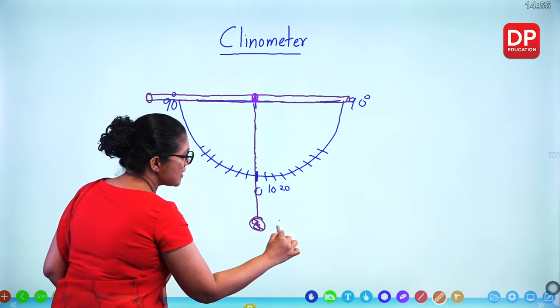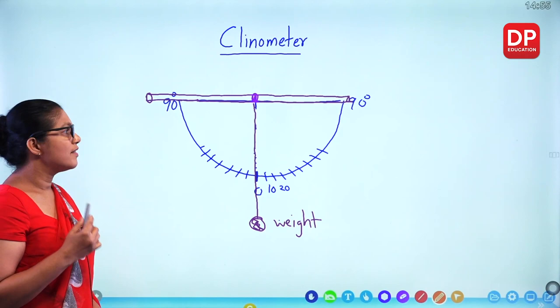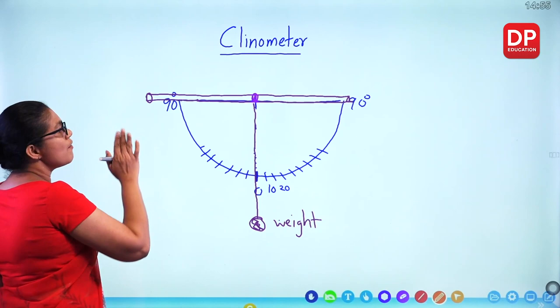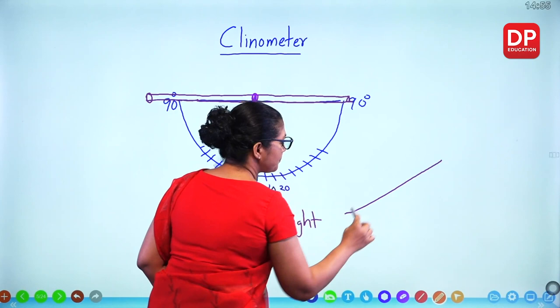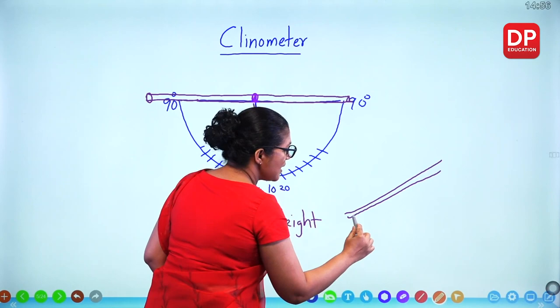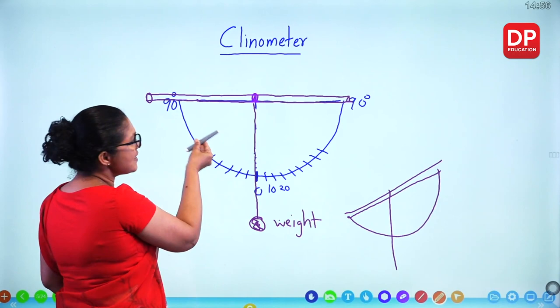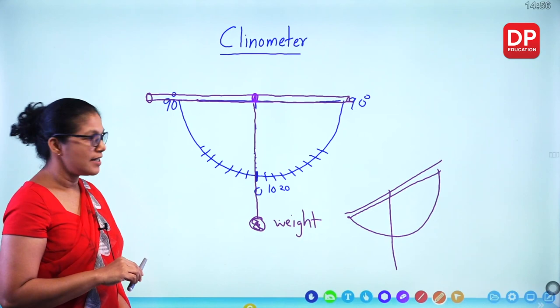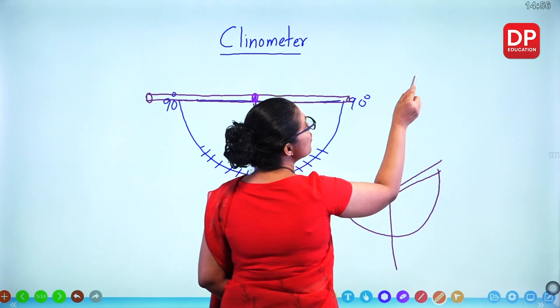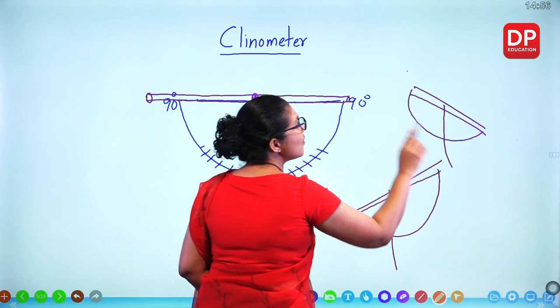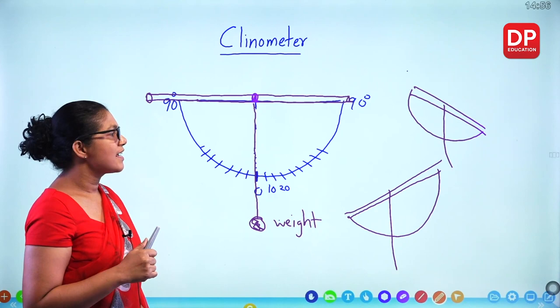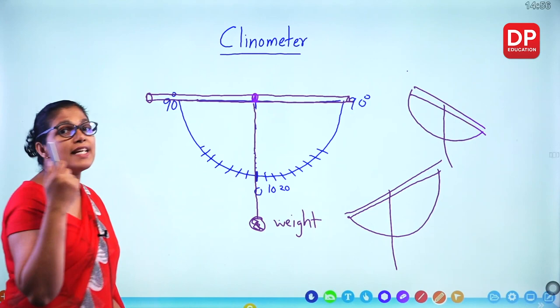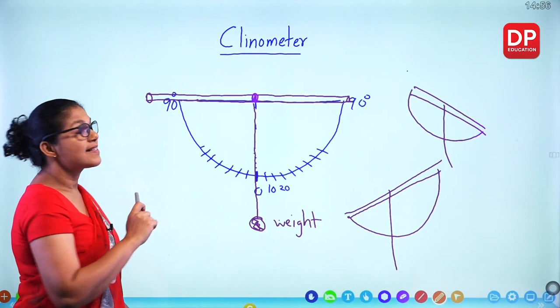When you want to look up, you look through the straw and the thread shows the angle on the left side — that's the angle of elevation. When you look down, from the right side you can measure the angle of depression. In grade 9 you should have made this clinometer to measure angles.